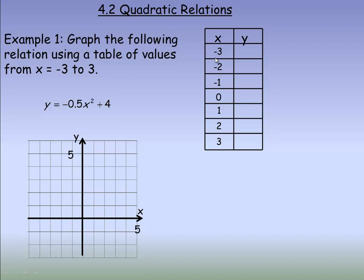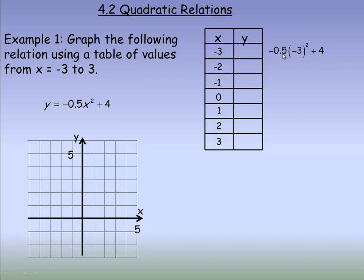We're going to substitute each of these values — negative 3, negative 2, etc. — in place of x. For example, to get the first y value, we substitute negative 3: negative 0.5 times negative 3 squared plus 4. Negative 3 squared is 9, and 9 times negative 0.5 is negative 4.5. When you add 4 to it, you get negative 0.5. So that's the calculation to find that y value.